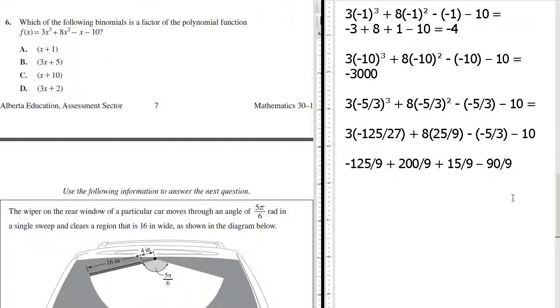So 200 minus 125 is 75, plus 15 is 90, minus 90... zero! Love it, we found our answer.